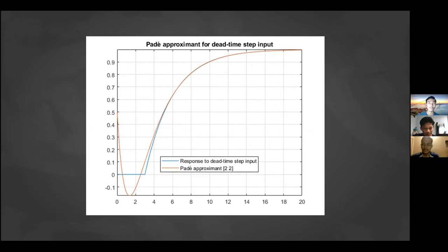As we can see, here is the graph that is usually used in most calculations. The blue line is the response to the time step input, and the orange line is the Padé approximation at 2/2.